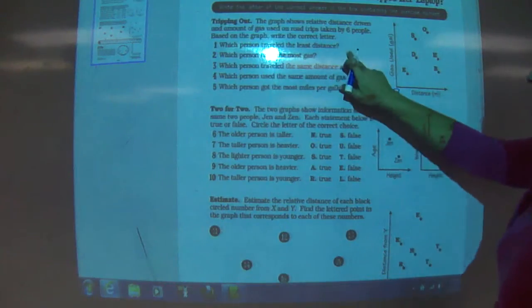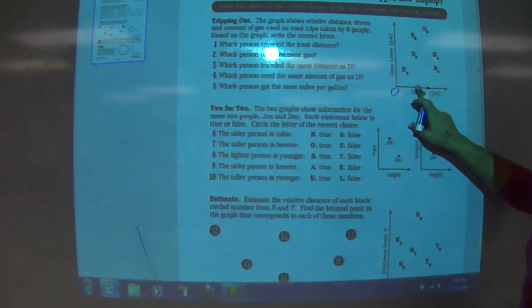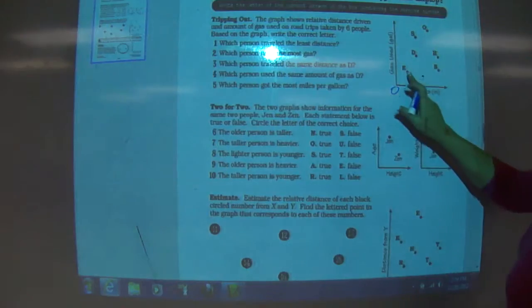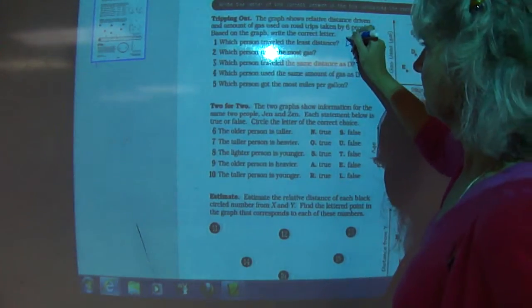Which person traveled the least distance? Well, obviously, if distance, this is zero and this is the most, E would be the least distance.